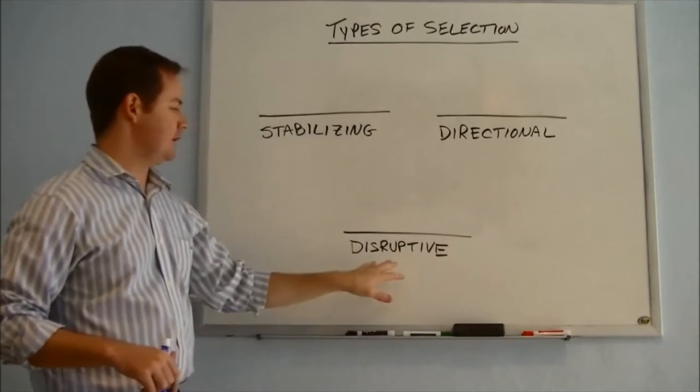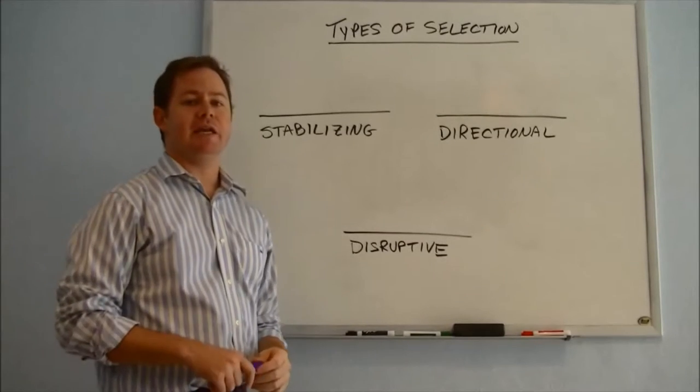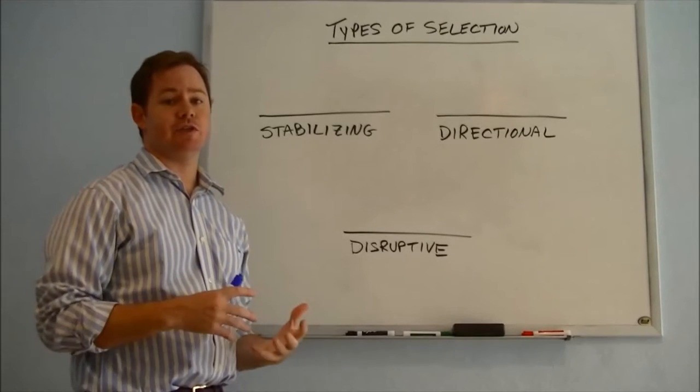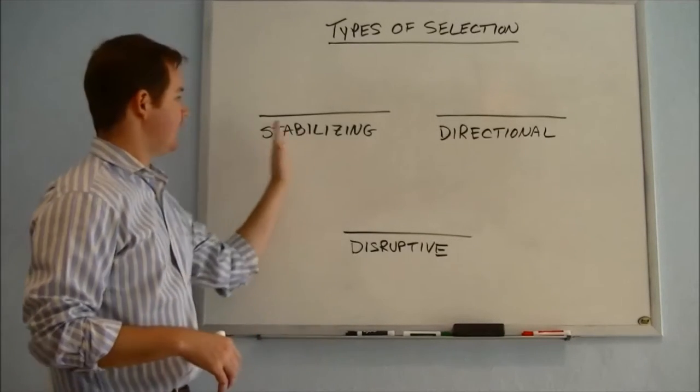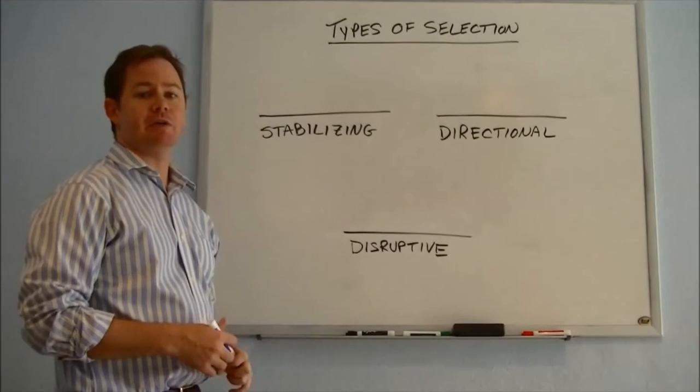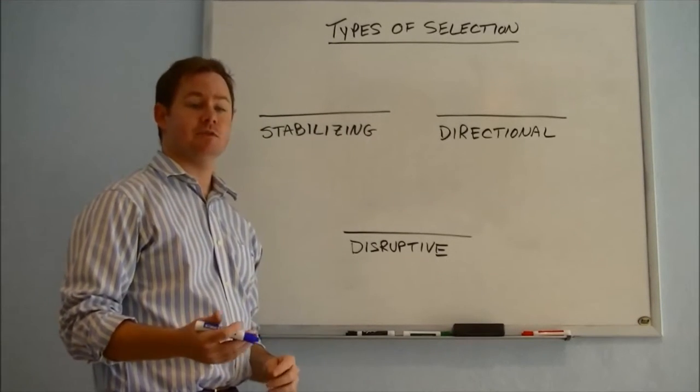So here we see stabilizing, directional, and disruptive selection. And it has to do with what kinds of traits are favored and towards what end of the spectrum. Let's say we were talking about something like size.